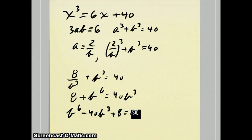Now this one does not factor, so we could either use completing the square or I could use the quadratic formula to get b to the 3rd equals 40 plus or minus the square root of